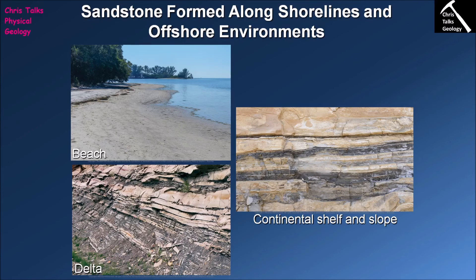Sandstones are also deposited in the slope environment due to underwater landslides which we call turbidity currents. These turbidity currents consist of a mixture of sandy and muddy sediments that come off the continental shelf and hurtle down the continental slope. At the bottom, the gradient flattens as you move from the slope onto the deep ocean seafloor, and the turbidity current loses velocity and energy, forcing it to deposit sediment. Being the heavier sediment, sand is deposited first, followed by silt-size clasts, and finally mud-size clasts, producing a sequence of graded beds going from sands at the bottom to muds at the top.